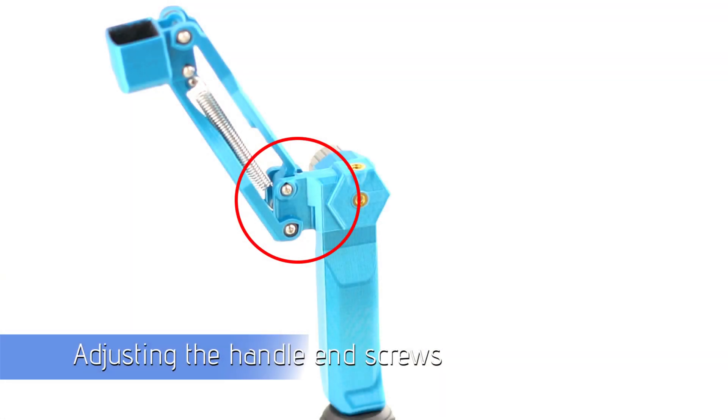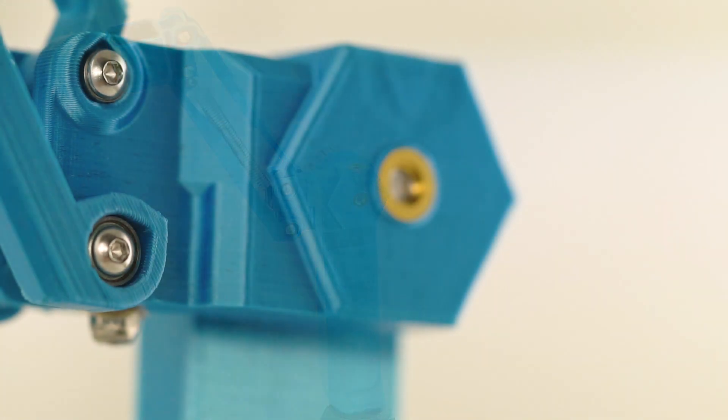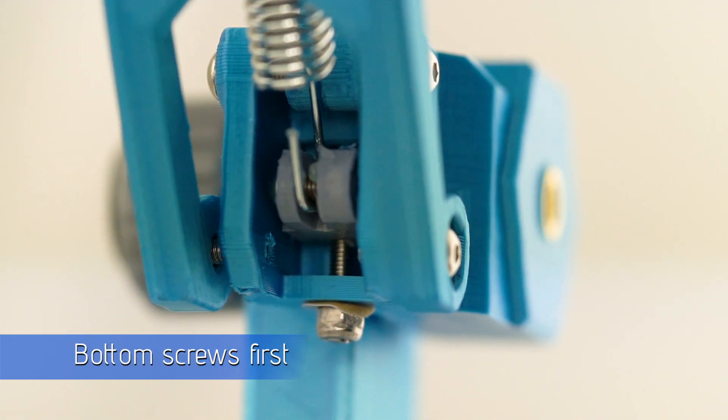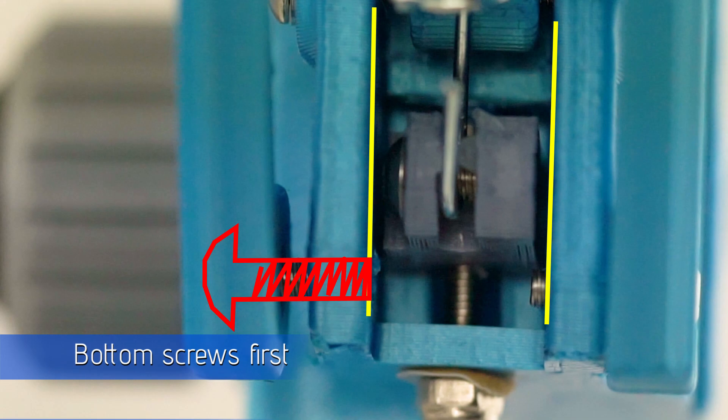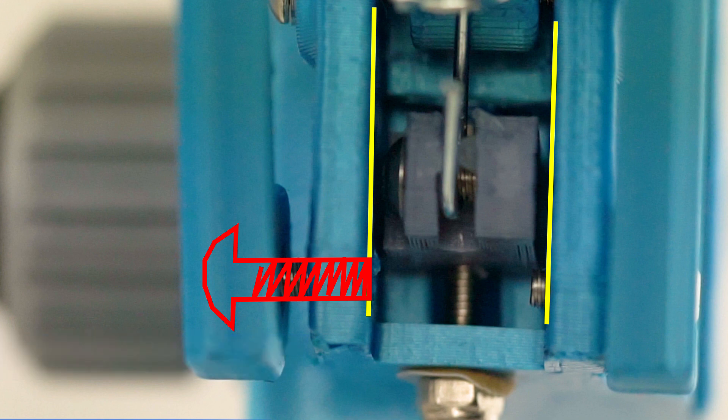Now to start, we'll be adjusting the handle end screws first. And we'll go to the bottom wider screws at first. Now you can see here, we've got an example of where the bolt should be. So that red section is a cross section of the bolt. Coming out at the end, it should meet dead along the surface there.